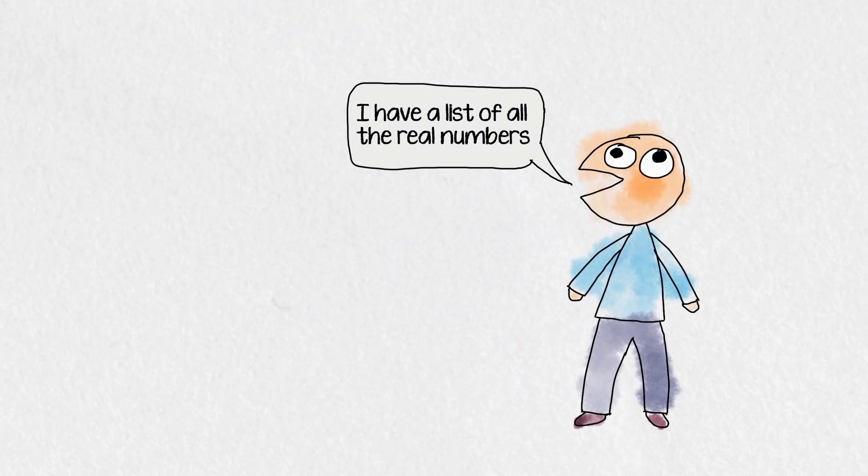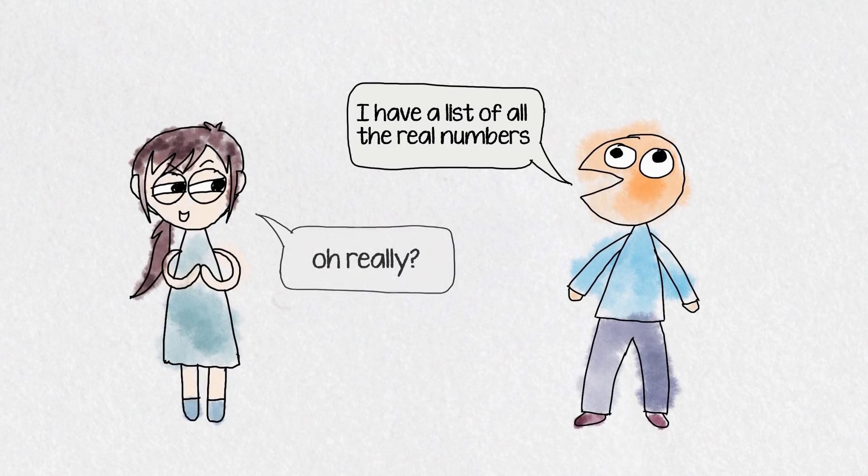Suppose someone says they have a list of all the real numbers. You want to step on their dreams and show them that their list is missing a real number. Before we get into the details of how we're going to do this, to avoid confusion I want to give the overall strategy of what we're doing.